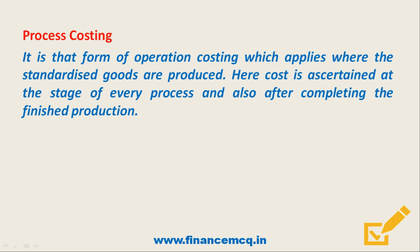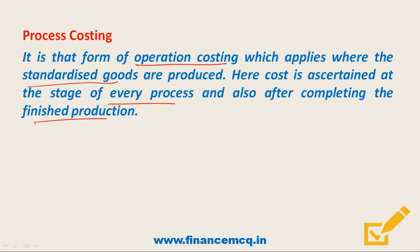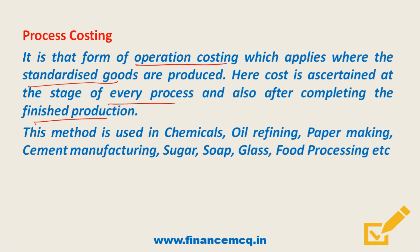Next we study process costing. It is a form of operation costing which applies where standardized goods are produced. Cost is ascertained at the stage of every process and also after completing the finished production. Each process represents a distinct stage of manufacture, and the output of one process becomes the input of the following process. The unit cost is arrived at by averaging the cost over the units produced. This method is applicable to chemicals, oil refining, paper making, cement manufacturing, sugar, soap, glass, and food processing.